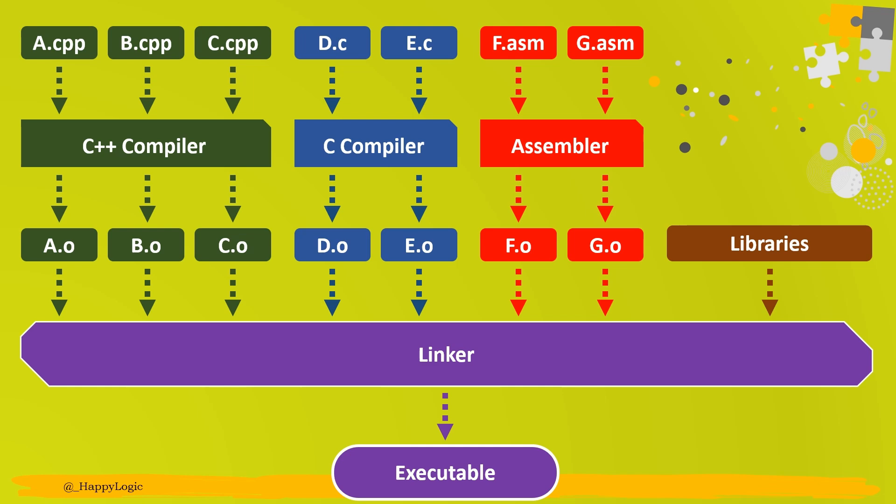In the end, when we have all the object files and already compiled libraries available, the linker takes all of them, optimizes the code, keeps the relevant pieces and converts to the final executable. This executable can be in any format, an exe file, a bin file, an elf file, or any other file that is finally used to burn a microcontroller or put on the target machine to run.